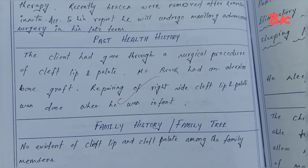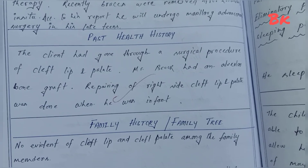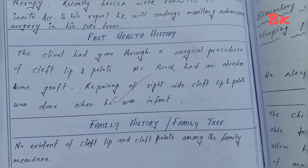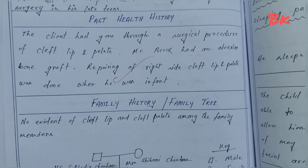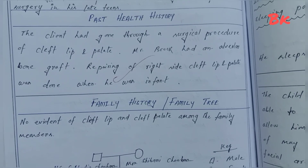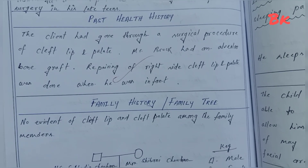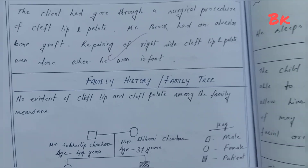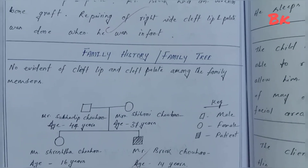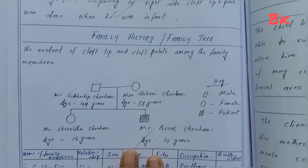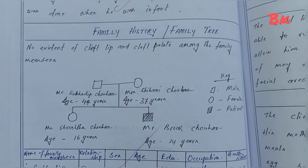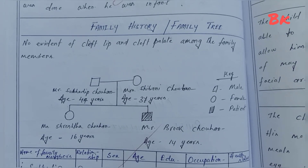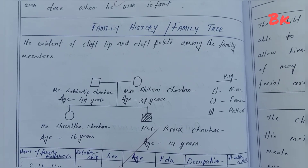Past health history: the client had gone through a surgical procedure of cleft lip and palate. Mr. Broke had an alveolar bone graft; repairing of right-side cleft lip and palate was done when he was an infant. Family history and family tree: there is no evidence of cleft lip and palate among the family members.